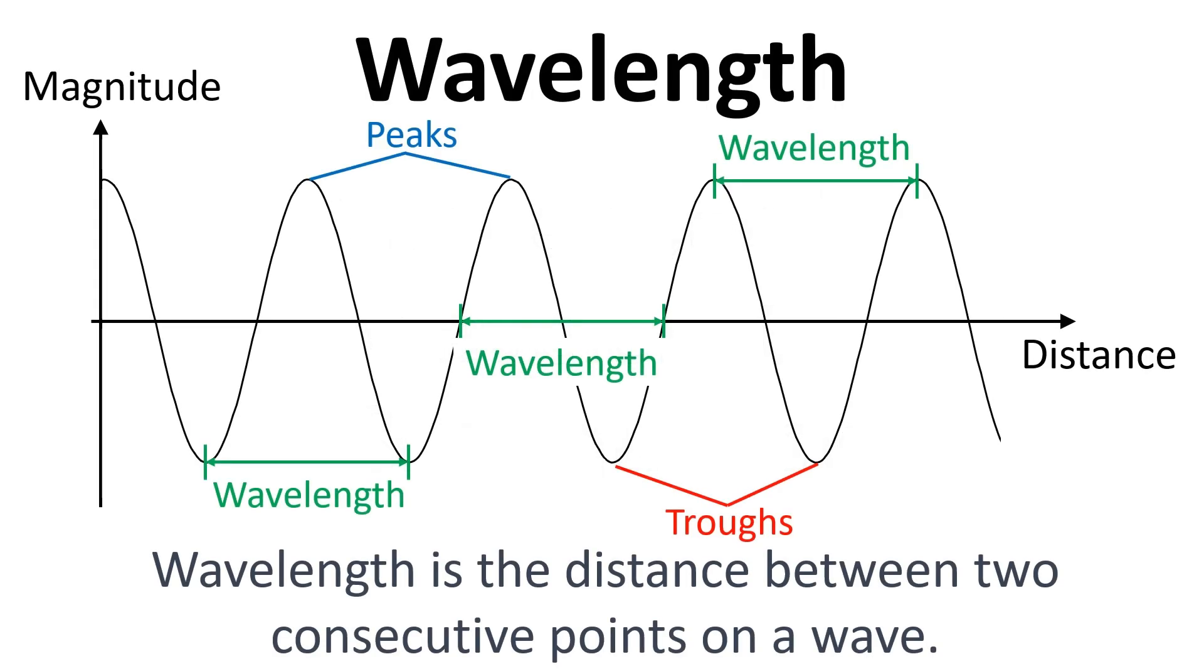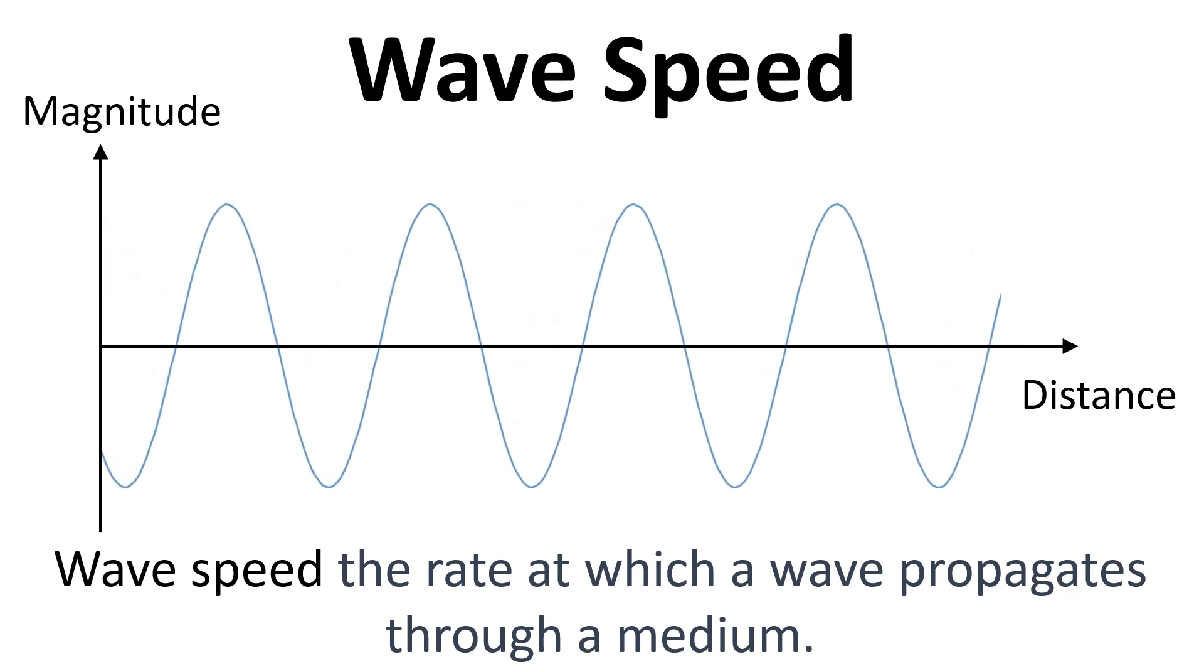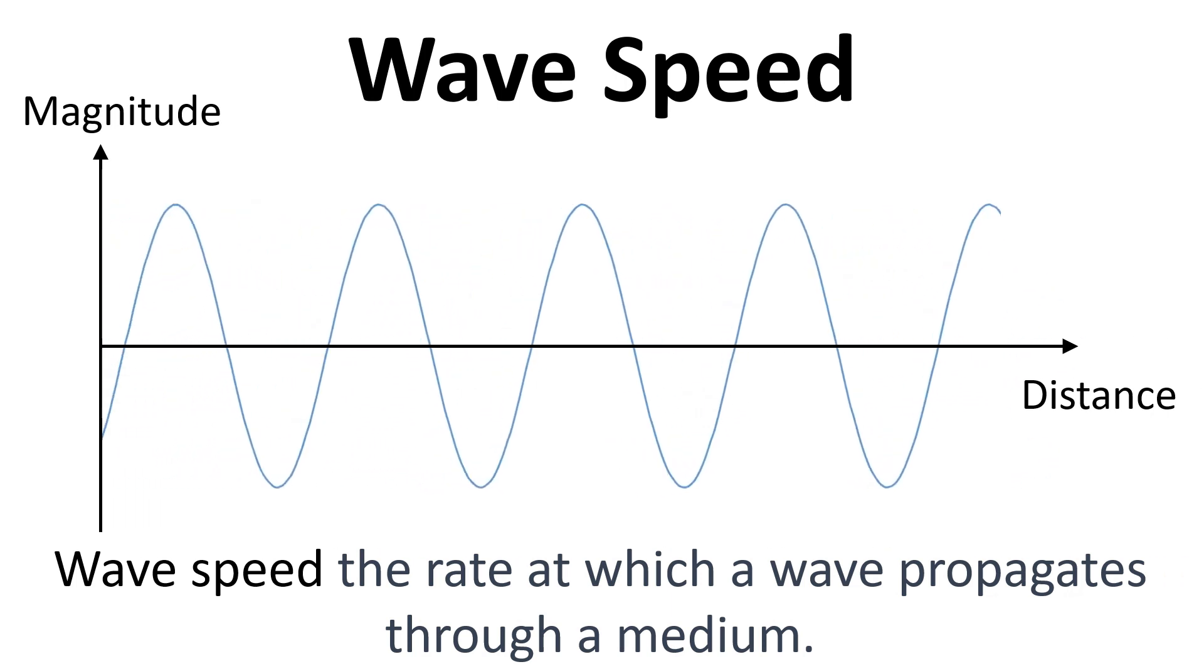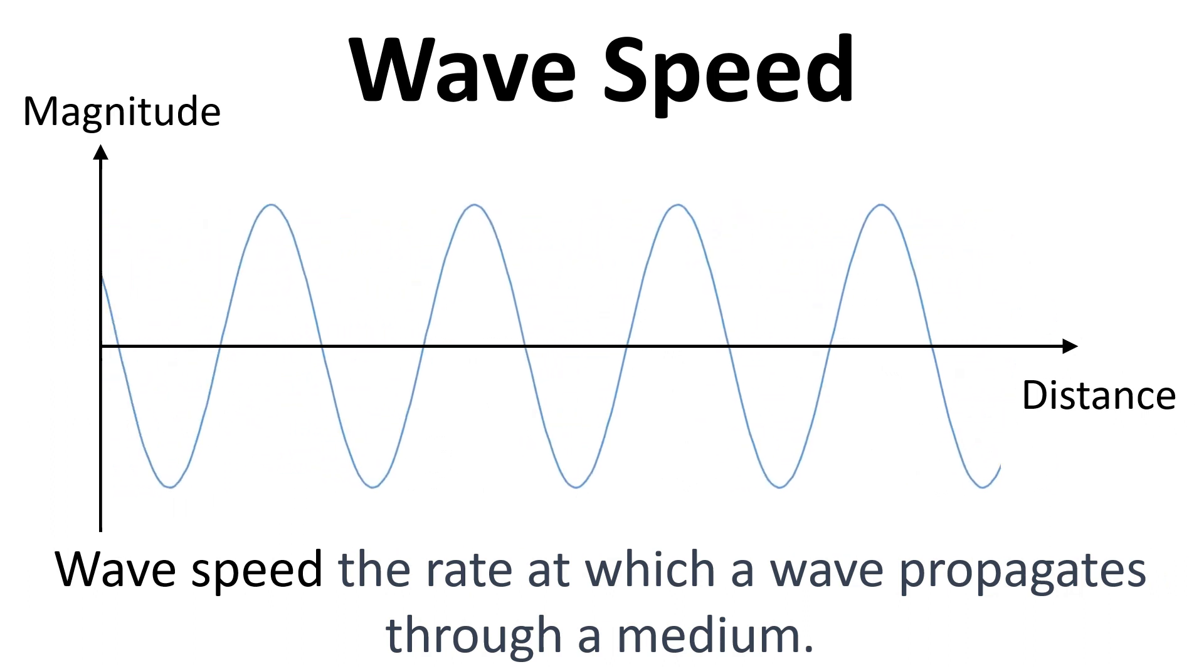First of all, a reminder about what wavelength is. It's the distance from peak to peak or indeed from any point to another point where the wave completes a full cycle. Wave speed is the rate at which a wave propagates through a medium and it has the units meters per second.